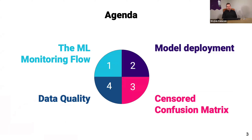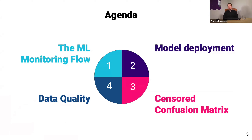First, we're going to talk about the general ML monitoring flow — how to monitor your machine learning models that are deployed to production, and how this flow applies to predictive maintenance models, which basically applies one-to-one. Then we're going to talk about three specific challenges we generally face when we deploy or work with models that are deployed to production for predictive maintenance.